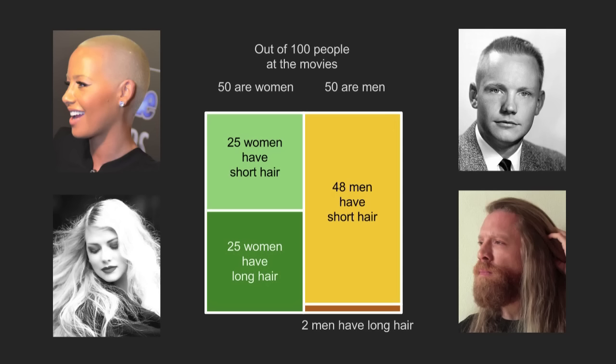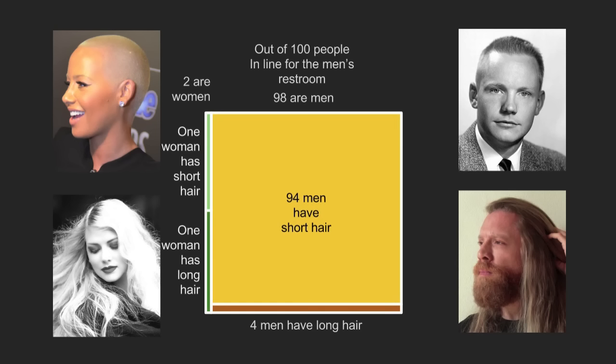To draw this a little differently: out of 100 people at the movies overall, we'll make the assumption explicit — 50 are women, 50 are men. This is how the different categories break down. In the line for the men's restroom, they break down a little differently.